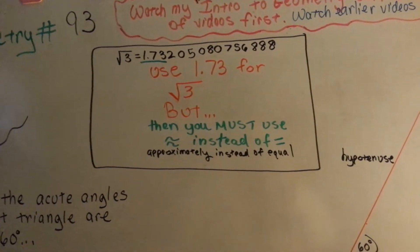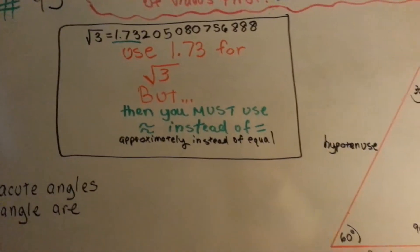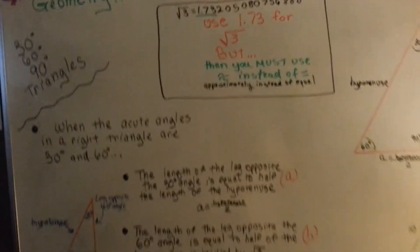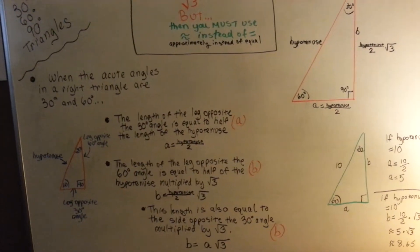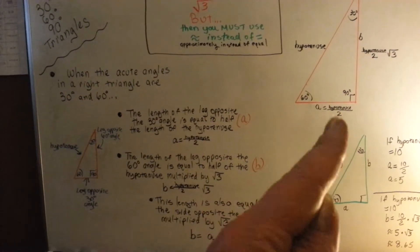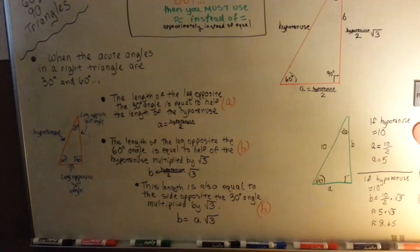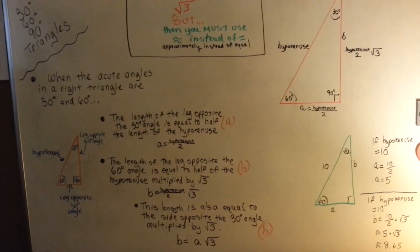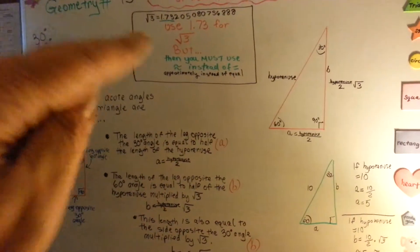Approximate and 1.73 is very acceptable. So that is how you can find the side of a 30 or 60 degree opposite side, and I hope I helped. Remember this rule.